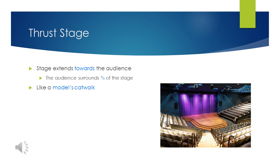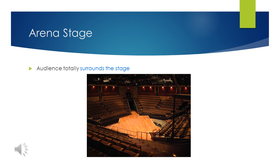Next we have the thrust stage. Here the stage extends towards the audience and they surround three-fourths of the stage. This one looks more like a model's catwalk. Here is the arena stage. The name is the best description — the audience totally surrounds the stage, much like any arena where you would see concerts, rodeos, or even football games.